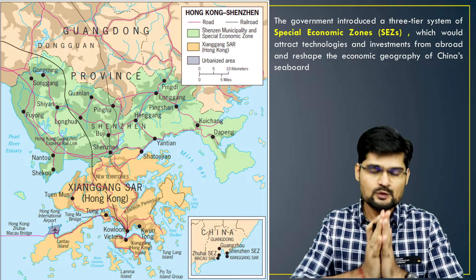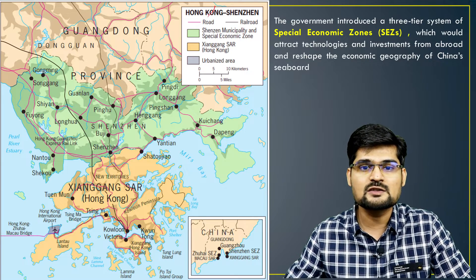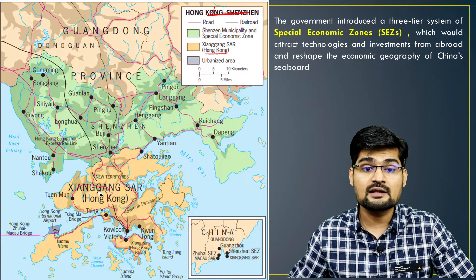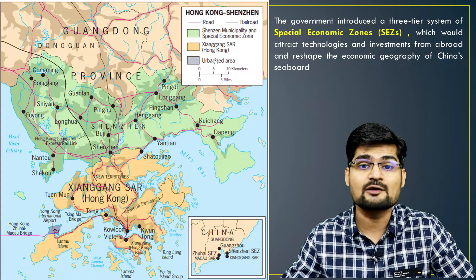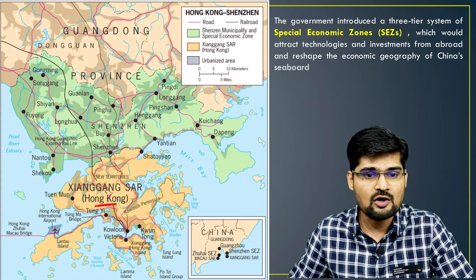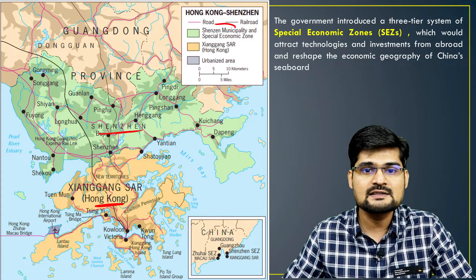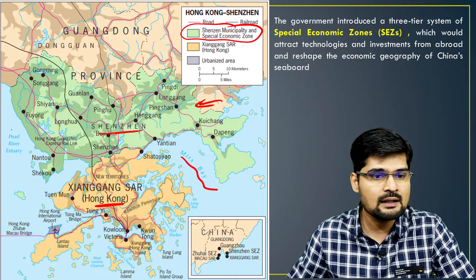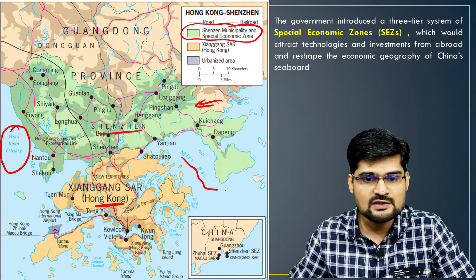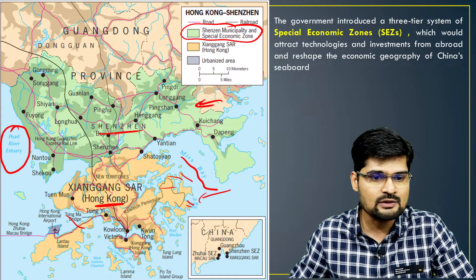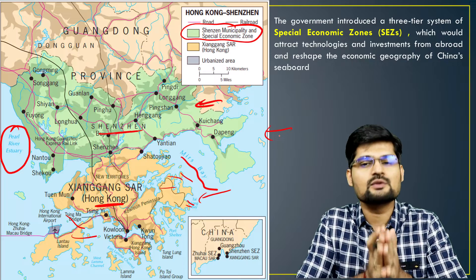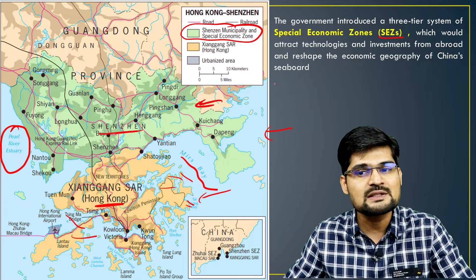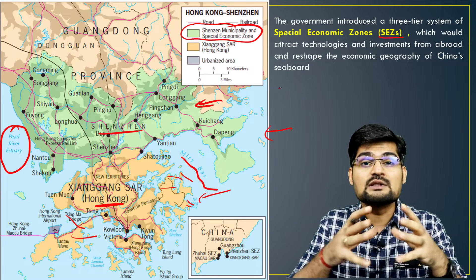The special economic zones are very famous. Hong Kong and Shenzhen's special economic zone is heavily industrialized with major corporate offices. This is Hong Kong, this is the Shenzhen area, and this is the special economic zone municipality shown in green. Features here include Mirs Bay and the Pearl River Estuary. The government introduced these special economic zones to boost and attract investments, and now they have become the world's hub of economics.